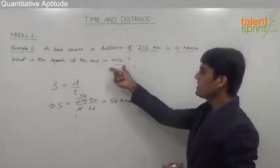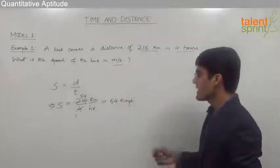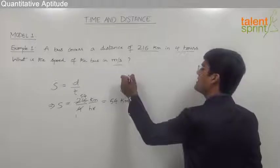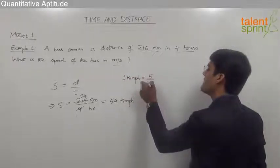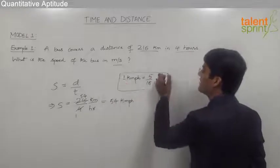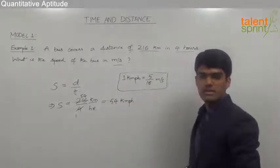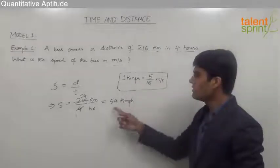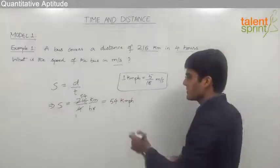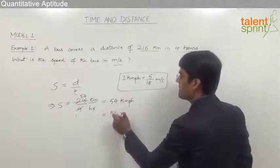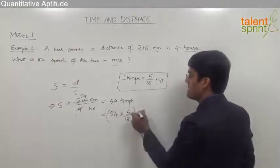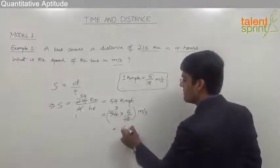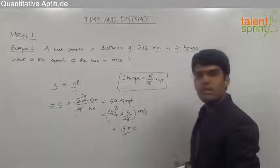Since the question asks for speed in meters per second, we need to convert from km/h to m/s. We know that 1 km/h equals 5/18 m/s. So we multiply 54 by 5/18: 18 goes into 54 three times, giving us 3 × 5 = 15 meters per second. The answer is 15 m/s.